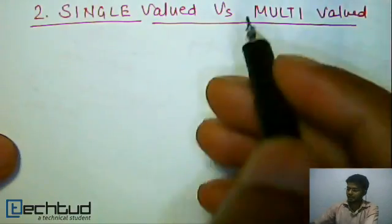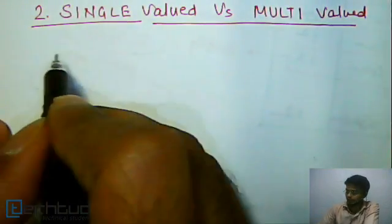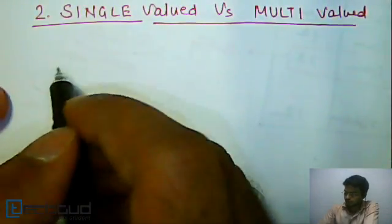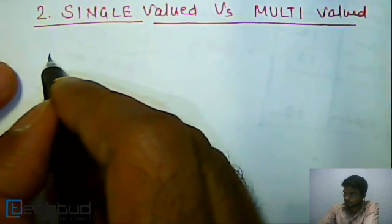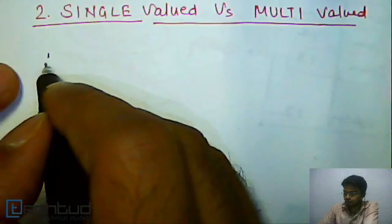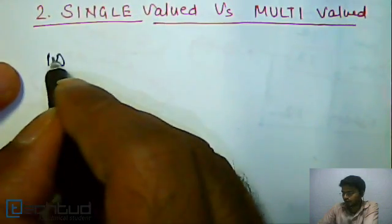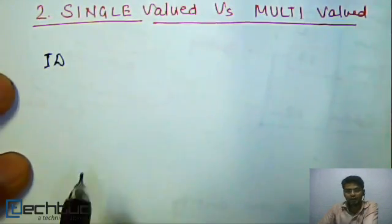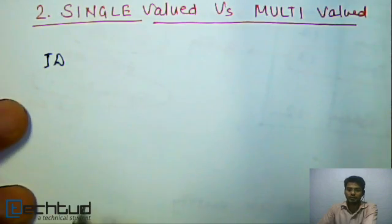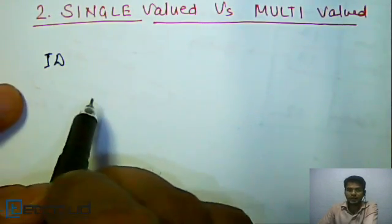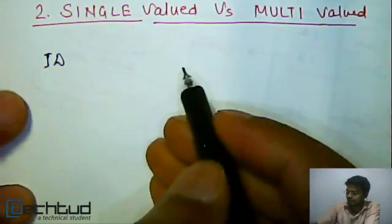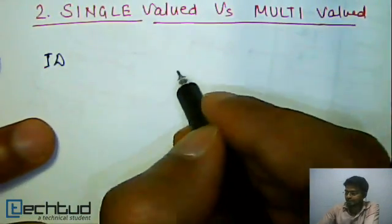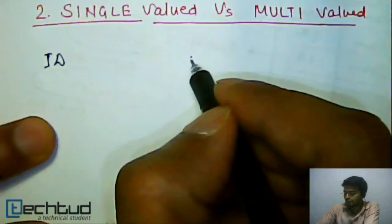Let's start with an example of single valued attribute and multi valued. If you consider information of a student, the student will have a student ID. In each college or department, they will provide an ID to a student that will be unique for each student, whereas a student may have multiple phone numbers.